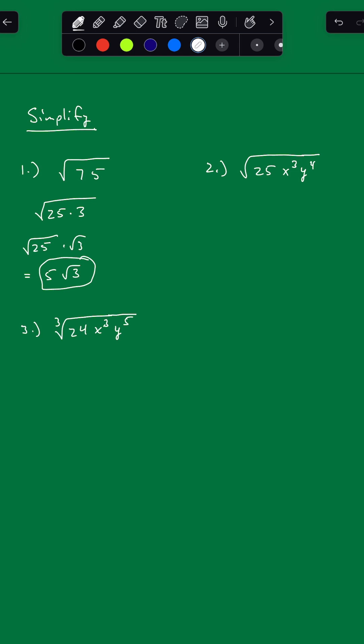We got square root of 25, x cubed, y to the 4th. Well, 25 is a perfect square. x cubed is not, but it does have a perfect square in it because that's understood to be a 2 there.